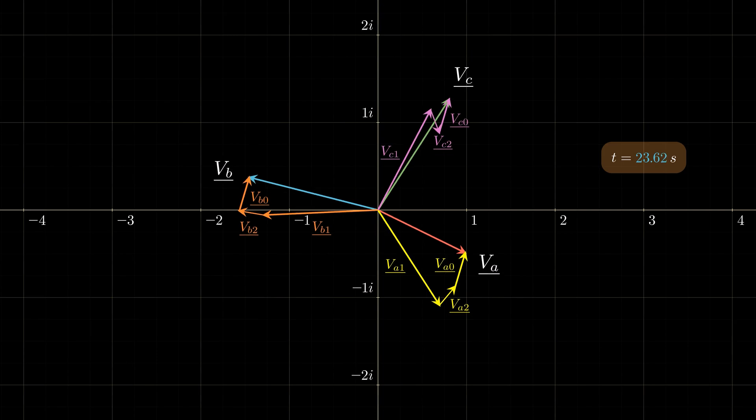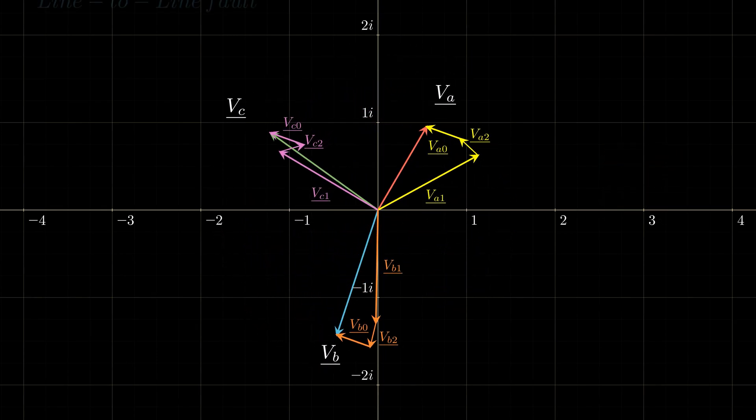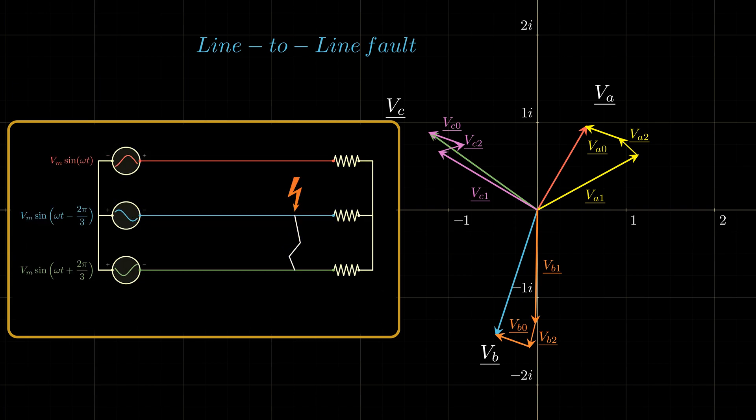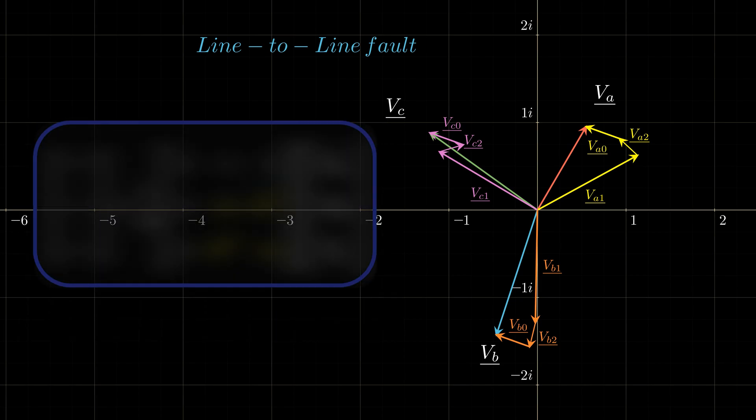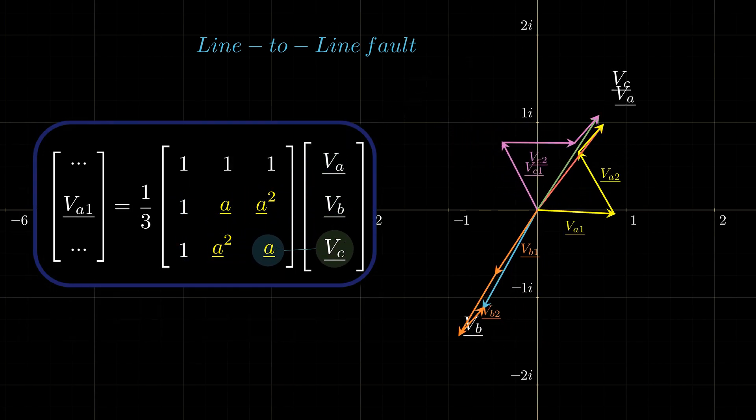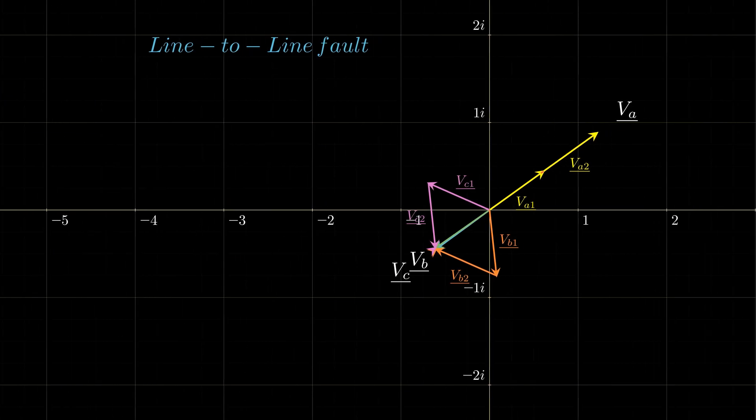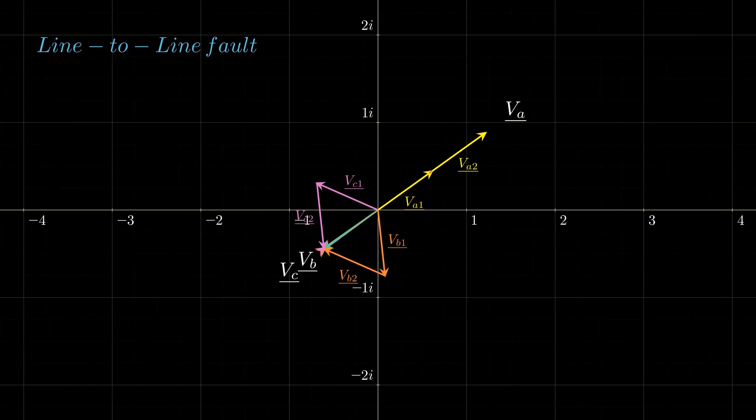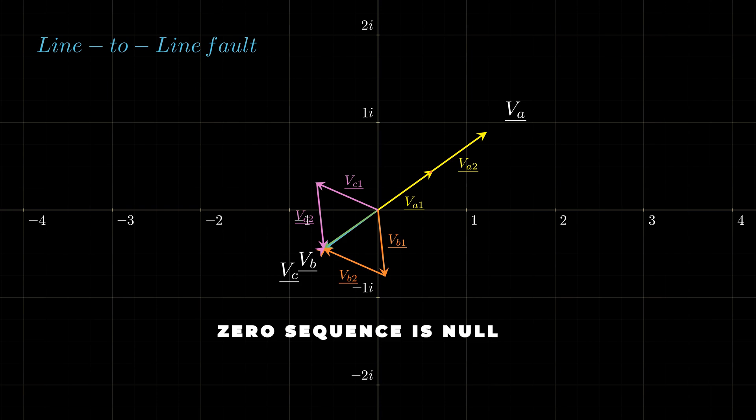Let's then examine a practical case: a line-to-line fault between phases B and C, for example, which is a typical fault that can occur in a three-phase system. In this case, the phase voltages B and C are essentially the same, assuming the fault impedance is low, and phase A remains mostly unchanged. Some observations give us insight into what the sequences actually represent. First, the zero sequence is null. This is because it is proportional to the current flowing through the neutral line, but in this case, since no conductor is in contact with the ground, the neutral voltage does not rise.